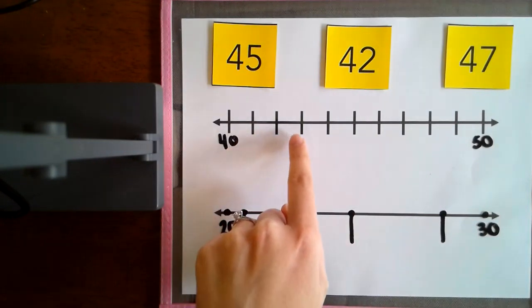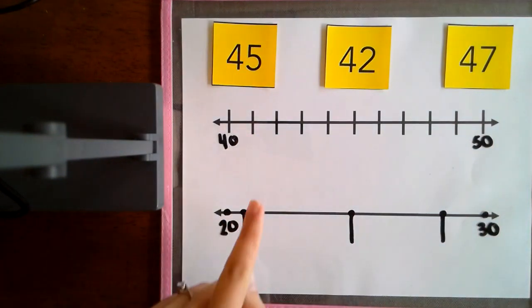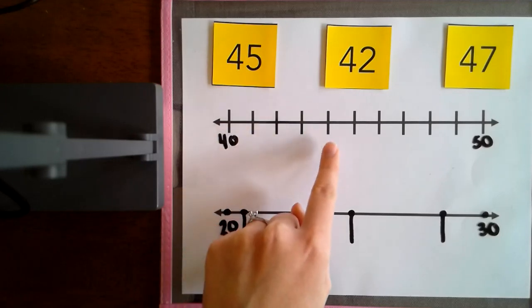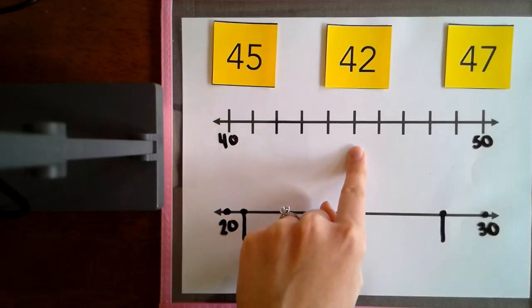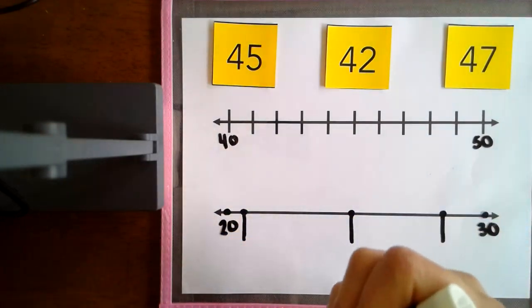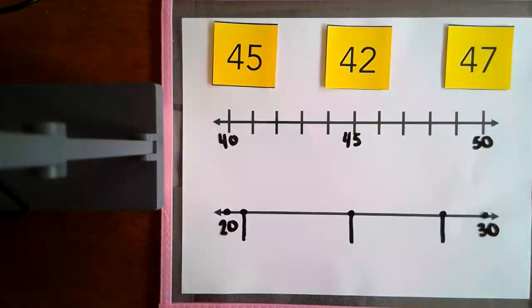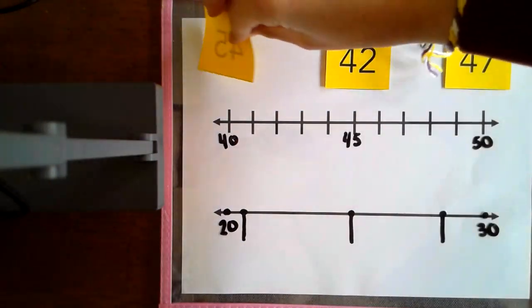Since there are individual lines, I could also count by 1. 41, 42, 43, 44, 45. And I end up at the same line that I said was in the middle. I'm going to write 45 there. I'm going to flip this over so we know we're done with that one.